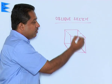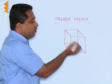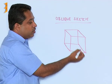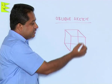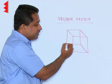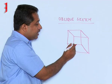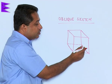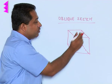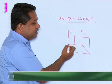If lines are visible to us, we draw them as full lines. If they are not visible, we draw them as dotted lines. For example, we can see the front and the side, but we cannot see the lines which are behind, so we represent them by dotted lines.